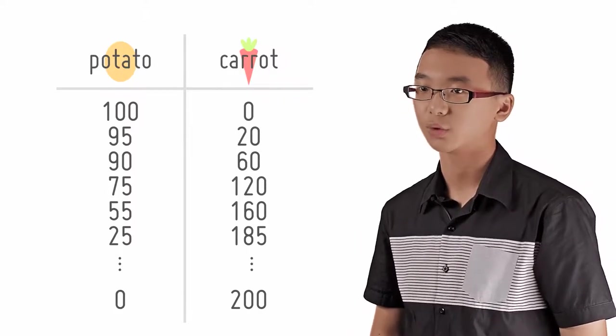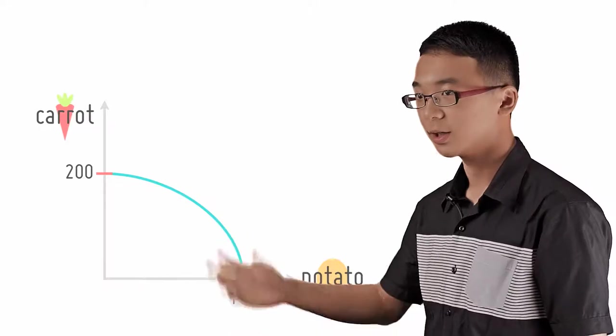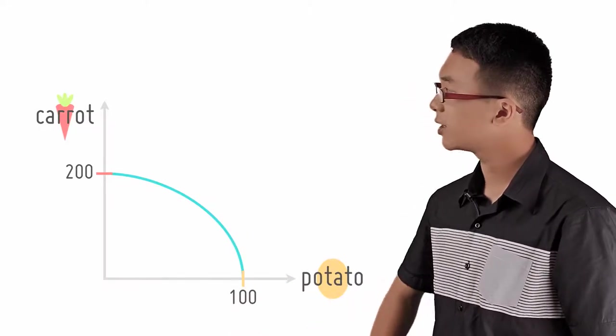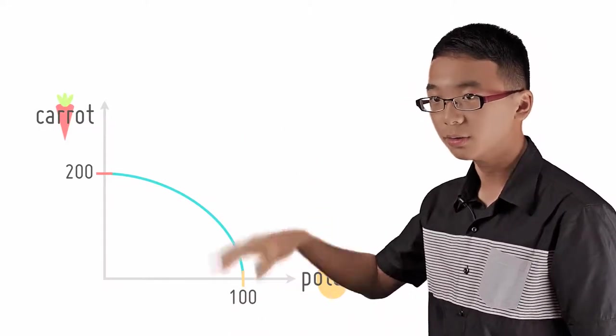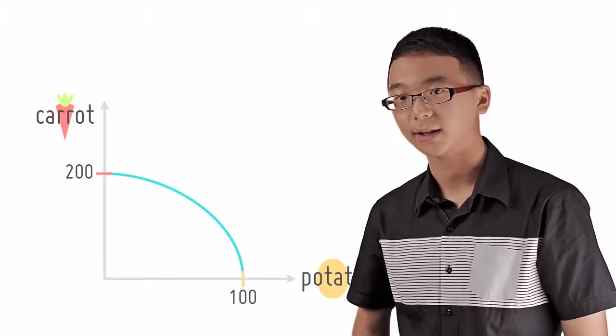So let's put this into a graph, like this. The axes represent the quantity of potatoes and carrots grown, and these points represent the data from the table.